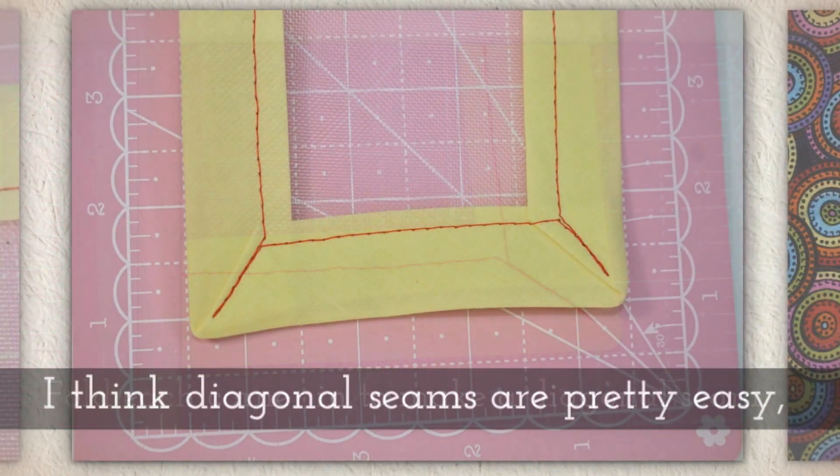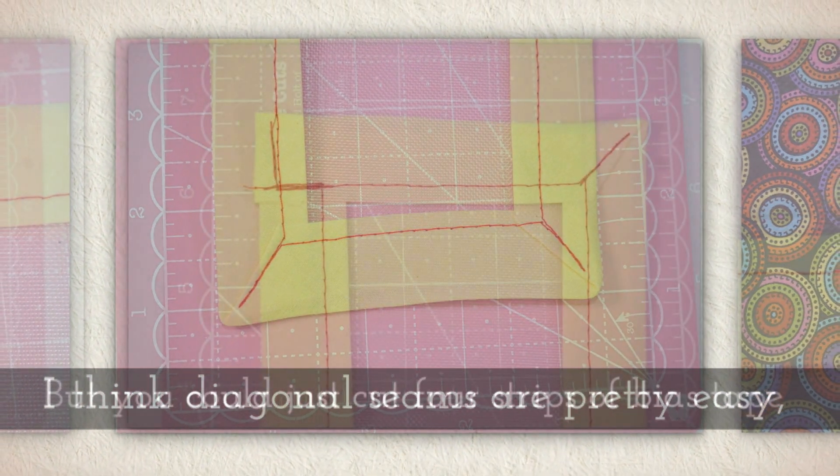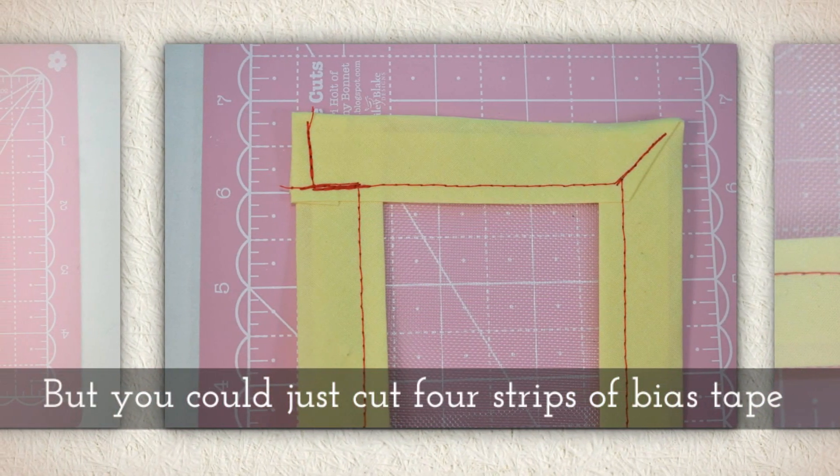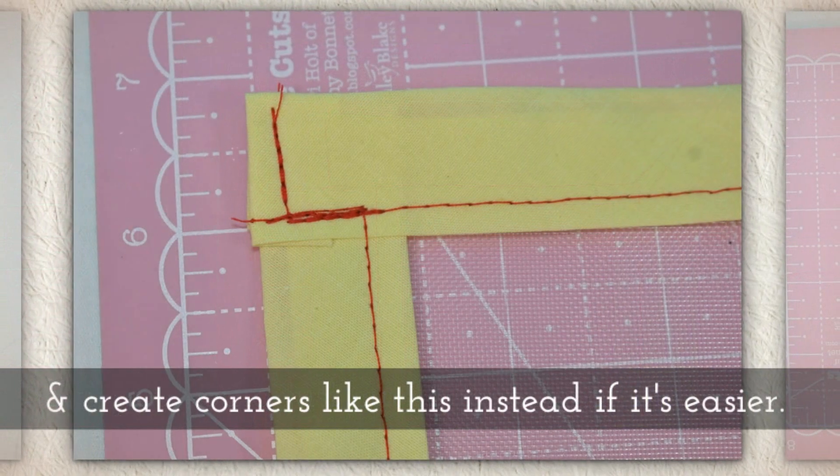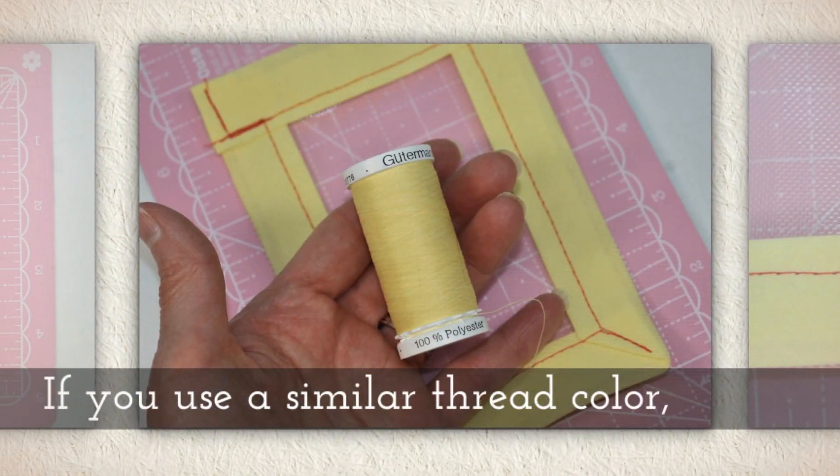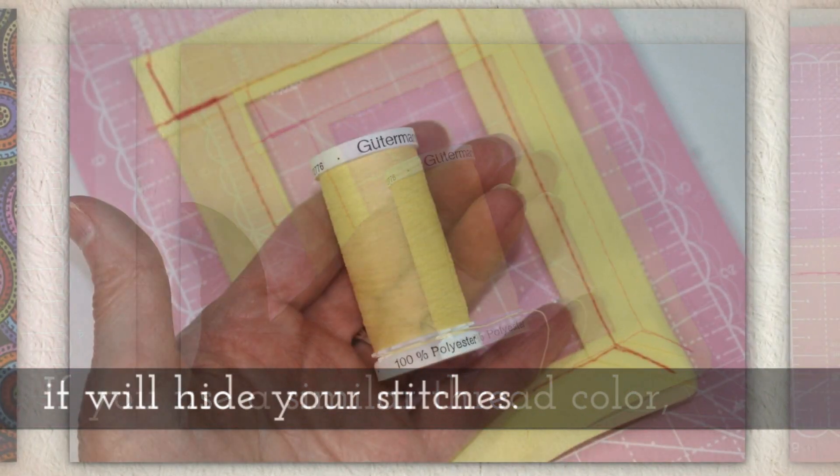Fold each corner in to make a diagonal seam. I think diagonal seams are pretty easy. But you could just cut four strips of bias tape, if you find that easier. And then create corners like this instead. If you use a similar thread color, it will hide your stitches.